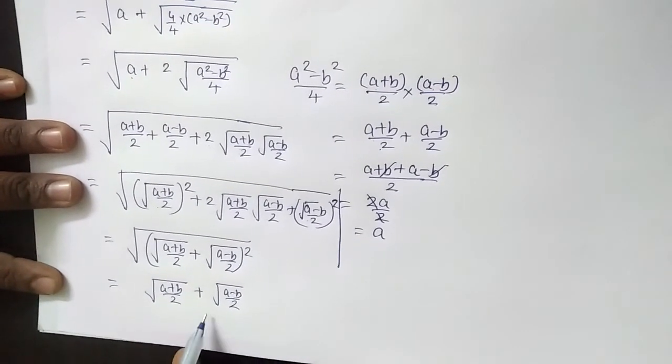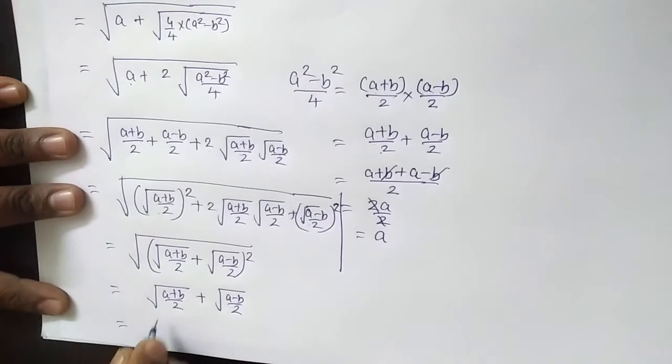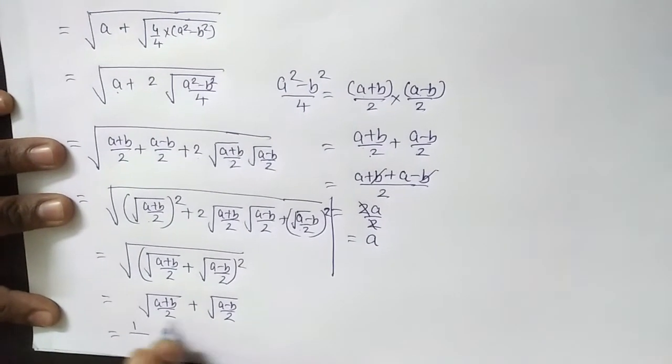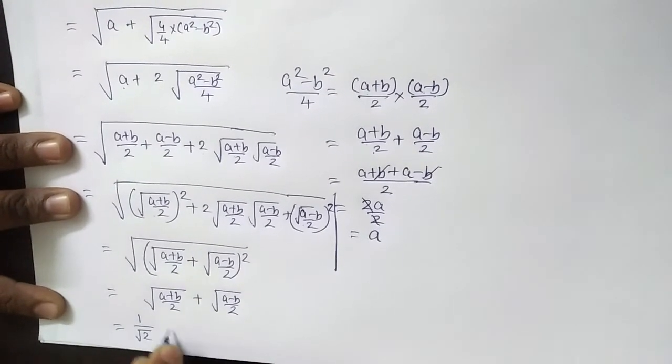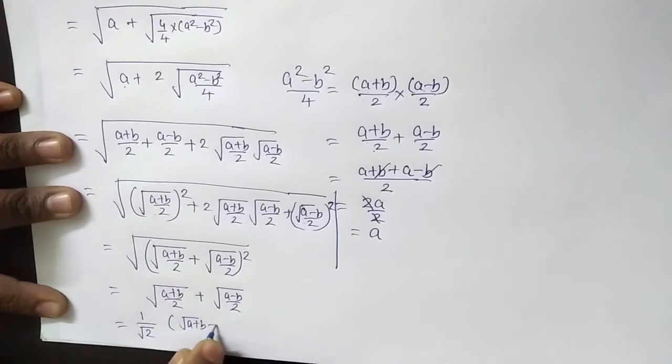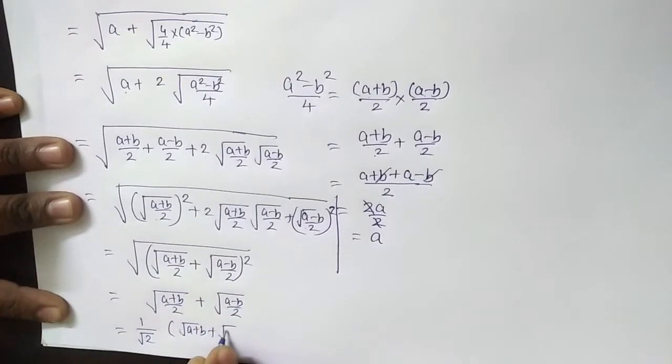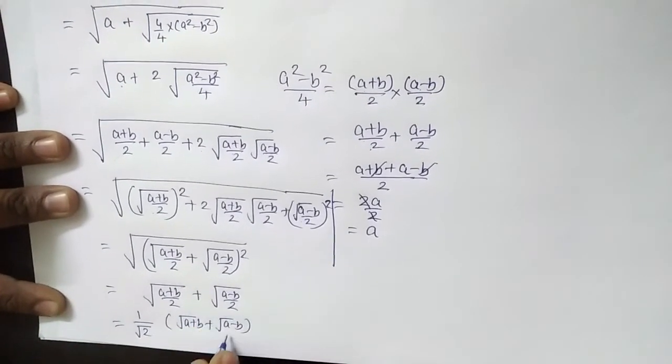As again, here it is under root, under root 2. Denominator should be rationalized. I will try to rationalize them. As both contain root 2, so I will take root 2 common, 1 upon root 2 into bracket a plus b plus under root of a minus b.